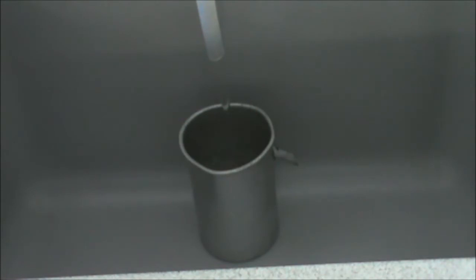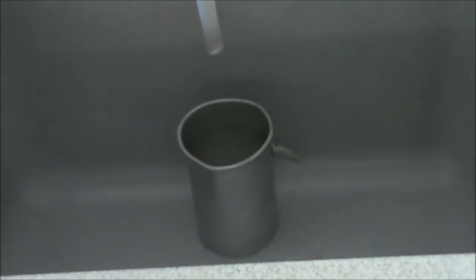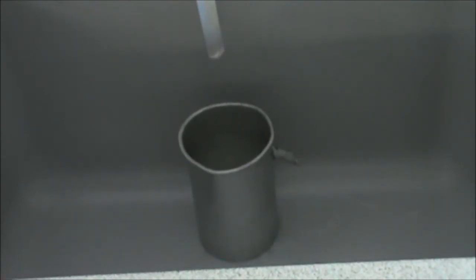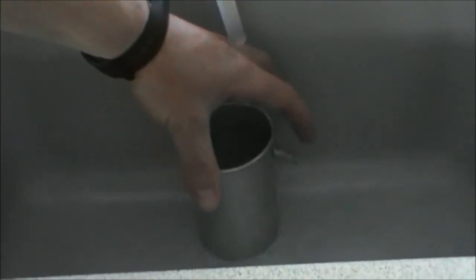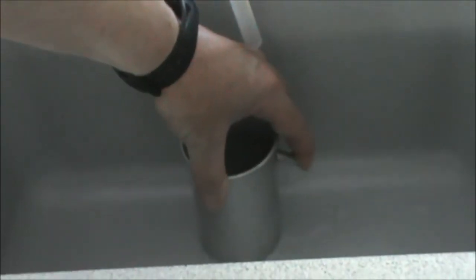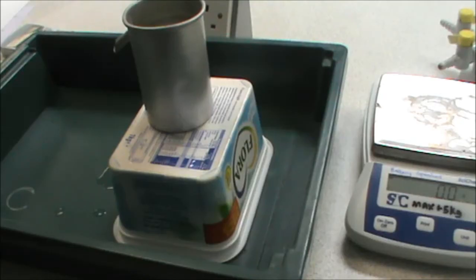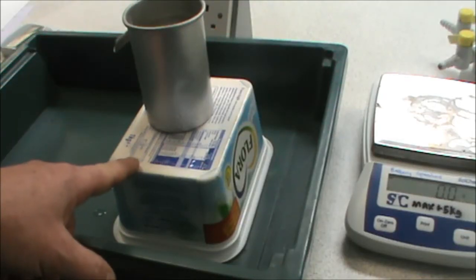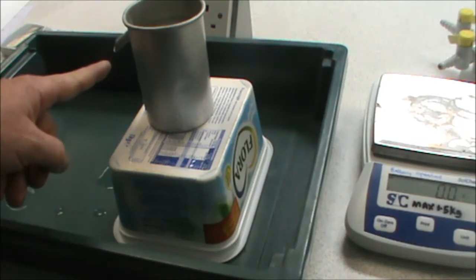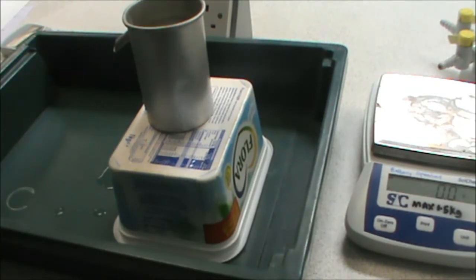The first thing we need to do is fill our Eureka can to the very, very top. As you can see, water is coming out of the spout. We wait until all of the water has drained out. We then know our Eureka can is filled to the maximum. To carry it back, we place our finger over the spout to prevent any more liquid coming out. We place our Eureka can on top of a box so we can get a measuring cylinder underneath the spout to catch the water as it is displaced.